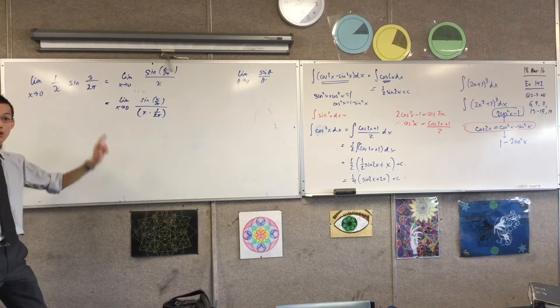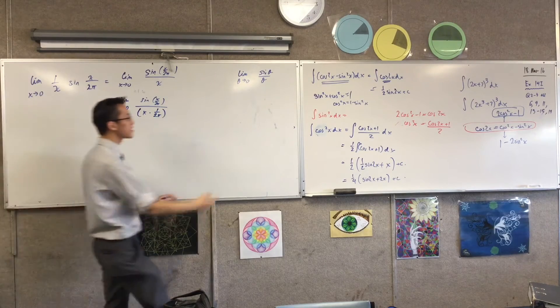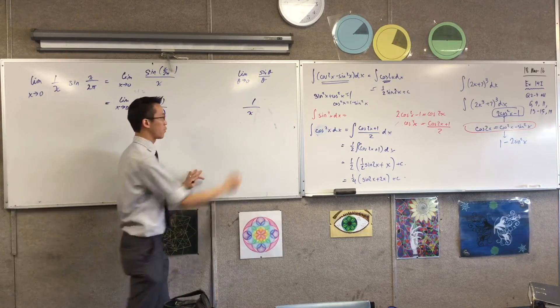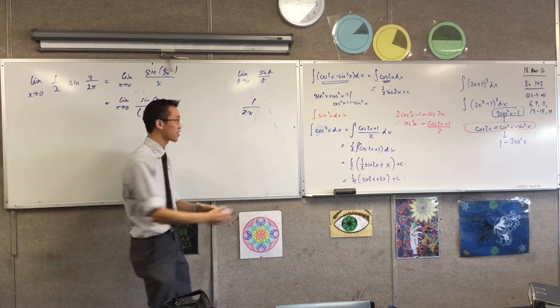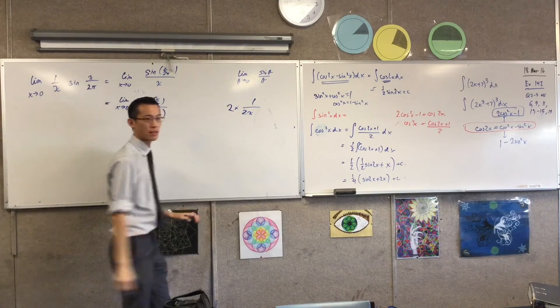Now if I had some fraction, like 1 over x, and I said, well if I put a 2 there, then in order to keep the fraction the same fraction, I'm going to have to multiply by 2 at the front, right?